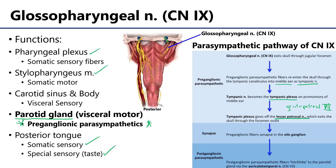That lesser petrosal nerve is going to go through the roof of the middle ear. It's going to be sandwiched between two layers of meninges within the cranial cavity. Then it's going to dive down deep through the foramen ovale, which we learned about in the first session. Foramen ovale is the hole through which the mandibular division of the trigeminal nerve, V3, moves out of the skull. Just below the foramen ovale is a parasympathetic ganglion called the otic ganglion.